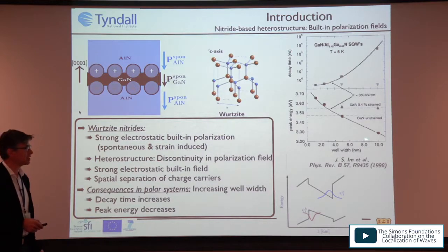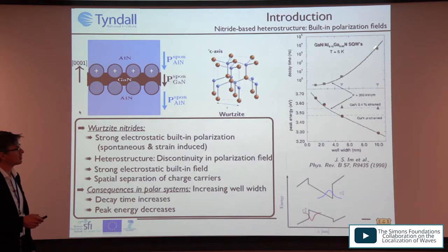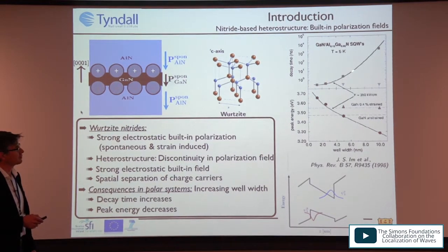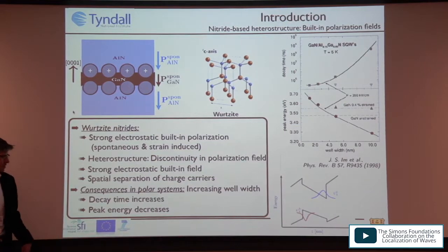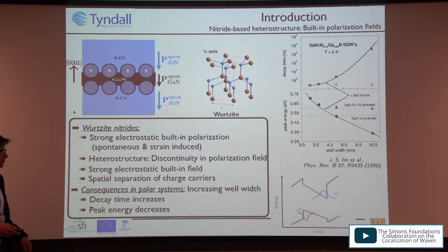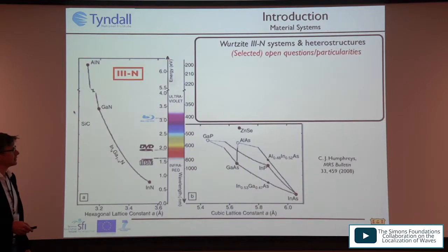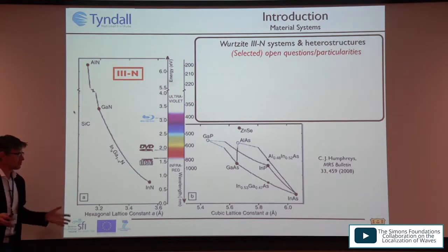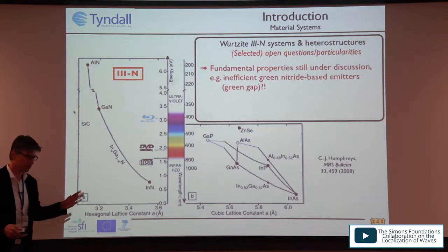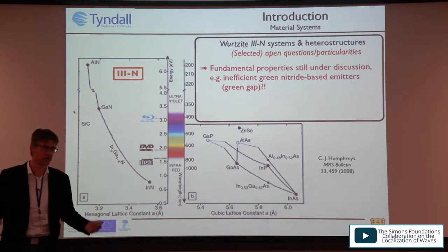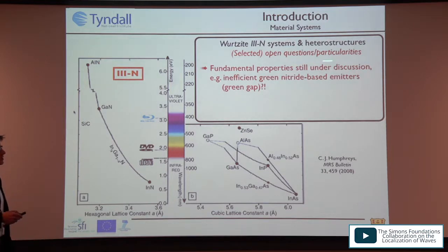This built-in field is seen experimentally. For a single gallium nitride quantum well embedded in aluminum nitride, the decay time is on the order of nanoseconds and increases with well width, while the peak energy drops below the gallium nitride unstrained bandgap. These nitride systems have features very different from other III-V materials. There is also the green gap problem: achieving a green emitter based purely on indium gallium nitride is a challenge, and different explanations exist for its origin.